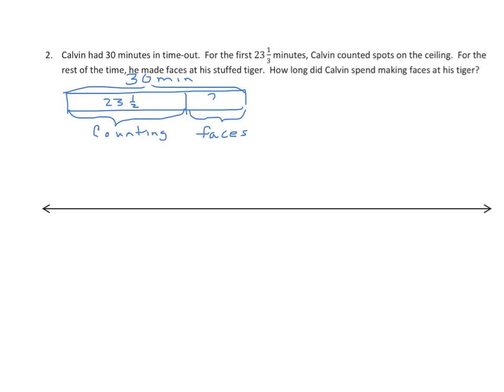We should know by now that when we see a tape diagram that looks like that, where we know the whole and we know one part, we have to find the other part we're subtracting. So let's set this up as a subtraction problem. So I have 30 minus 23 and 1 half. Let's work on that number line. So I'm going to start with my 30. I'm going to subtract my 23. 30 minus 23 is 7.